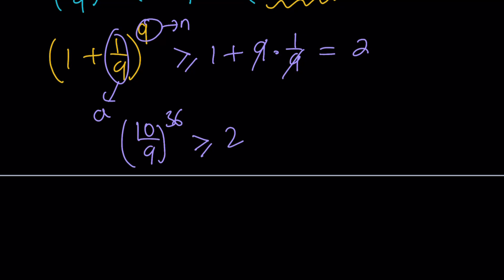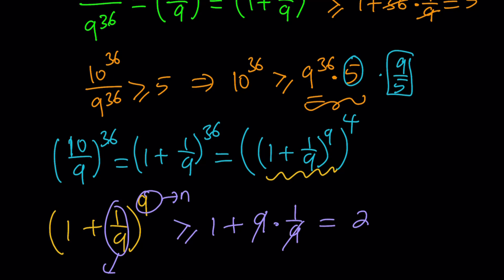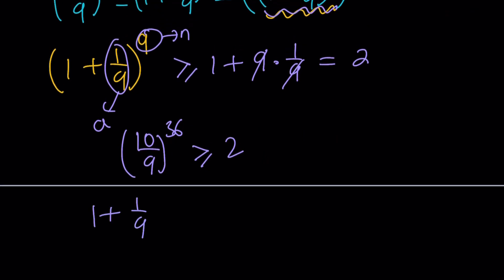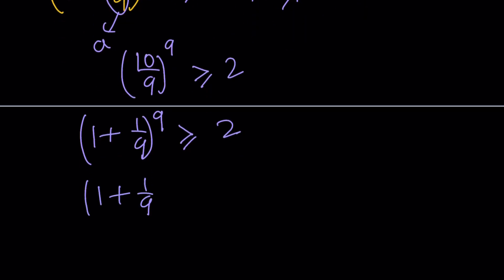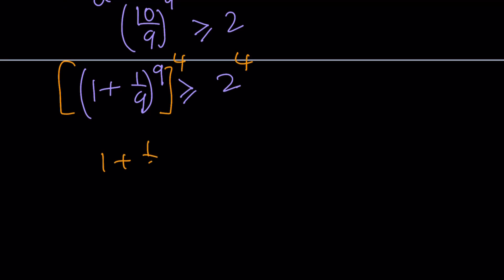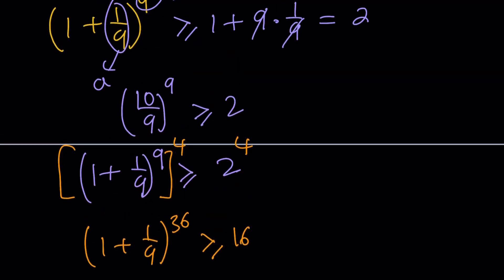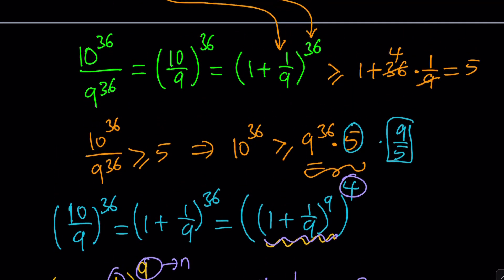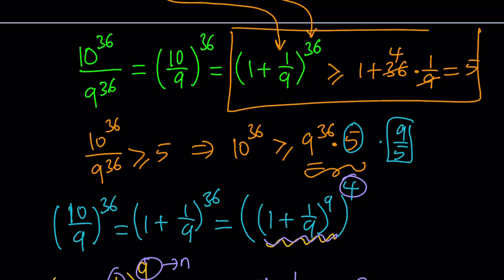Now we raise both sides to the fourth power. Since (1 + 1/9)^9 ≥ 2, raising both sides to the 4th power gives (1 + 1/9)^36 ≥ 2^4 = 16. This is a much better bound than the 5 we got before — our expression is now proven to be greater than or equal to 16.